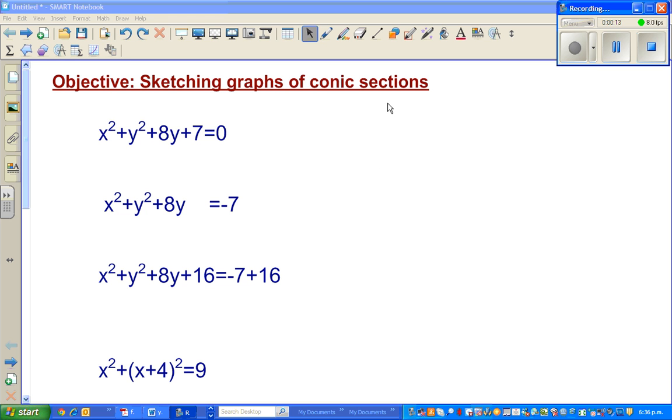A conic section comprises of graphs like circle, ellipse, hyperbola and parabola. They all are grouped under the conic section.